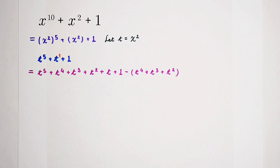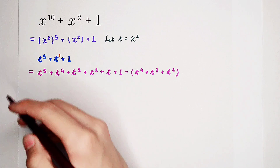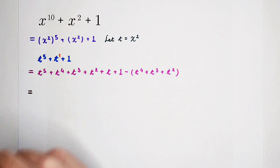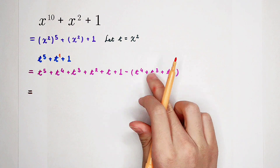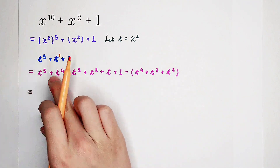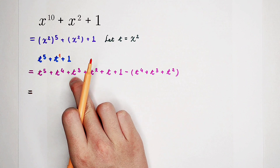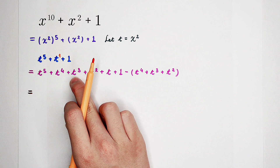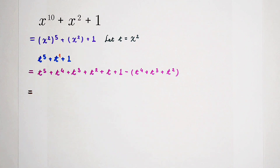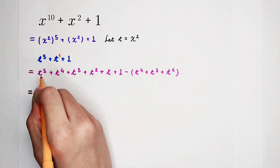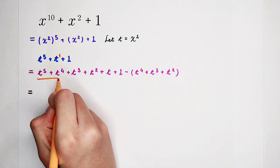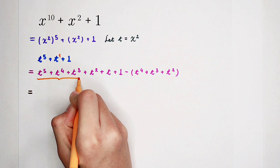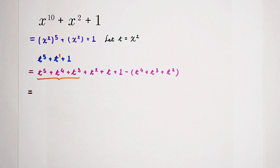Now, maybe we have a method for this question. Solve it by using the grouping method. Because in the first three terms, they have a common factor — that is t cubed.